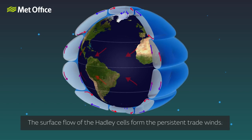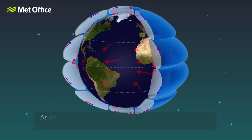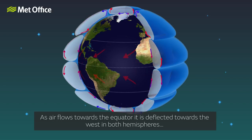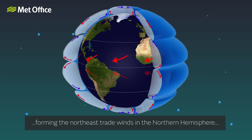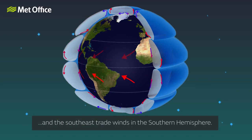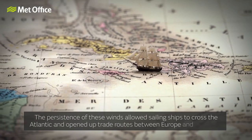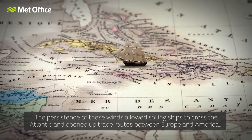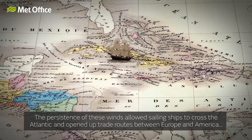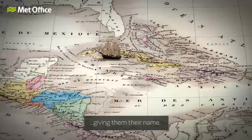The surface flow of the Hadley cells forms the persistent trade winds. As air flows towards the equator, it is deflected towards the west in both hemispheres, forming the northeast trade winds in the northern hemisphere and the southeast trade winds in the southern hemisphere. The persistence of these winds allowed sailing ships to cross the Atlantic and opened up trade routes between Europe and America, giving them their name.